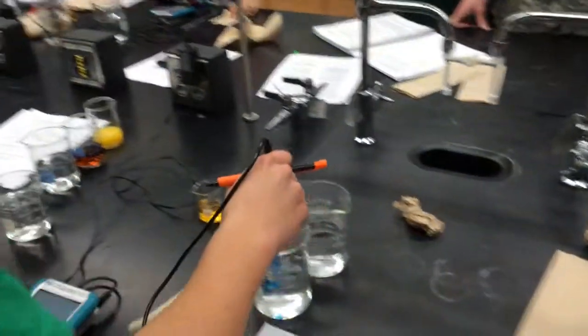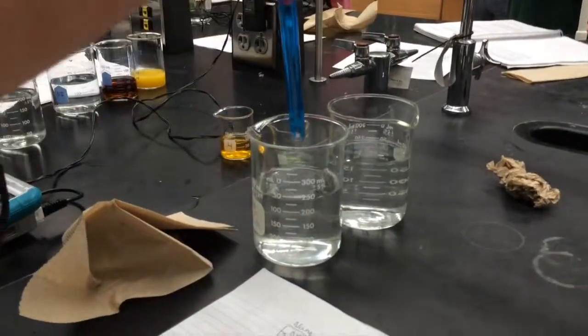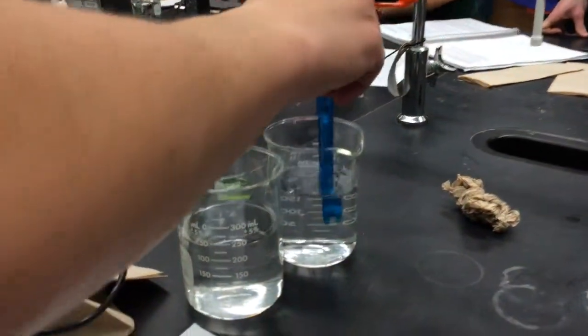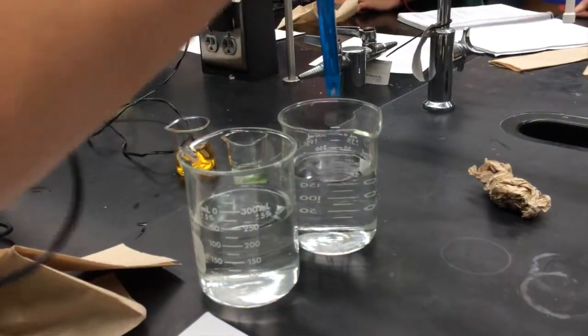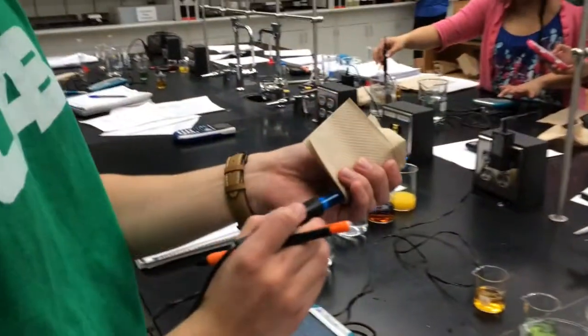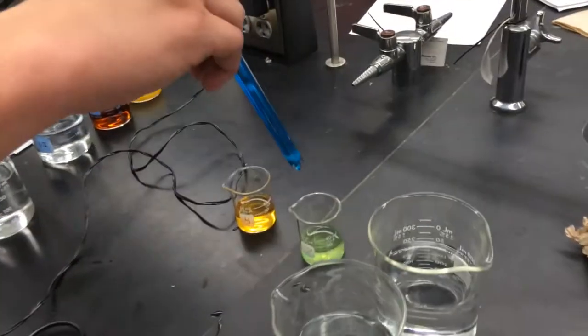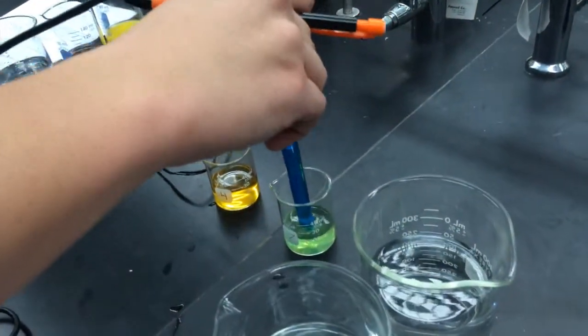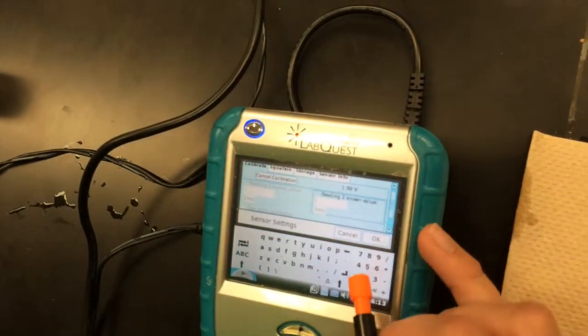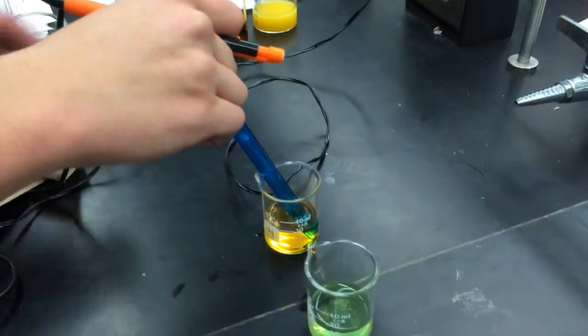Here we can see Ben cleaning the probe to prepare it to obtain the pHs of the 2 buffer solutions. Ben obtains the calibration for the 7 pH buffer, and now for the 4 pH buffer.